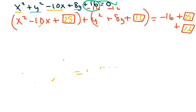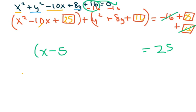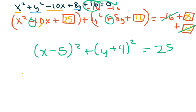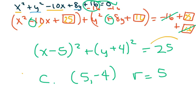The 16s cancel and I'm left with 25 on the right. Simplifying the trinomial: x minus — half of 10 is 5 — squared, plus y plus — take the operator, half of 8 is 4 — squared, equals 25. The center is going to be 5, negative 4, and r equals 5 because you take the square root of 25.